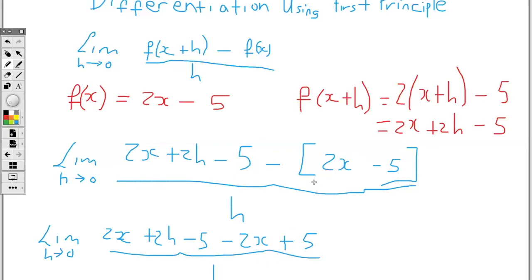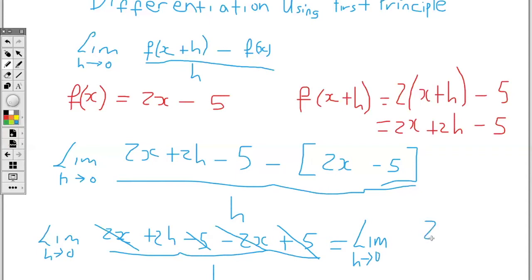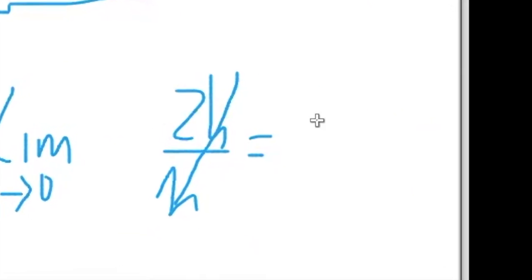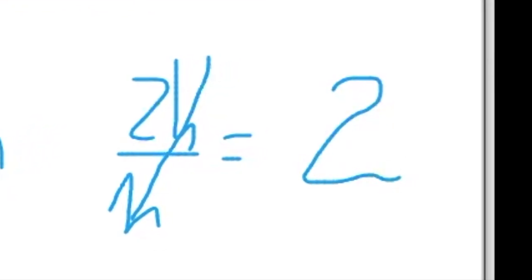One thing to be aware of: whatever is behind the subtraction sign will always cancel with something in front. Some people cancel the 2x straight away knowing it will be gone, and the minus 5 will cancel with positive 5. Showing all steps: 2x cancels minus 2x giving zero, and minus 5 plus 5 is zero. So we have the limit as h tends to 0 of 2h over h. The h cancels, and the limit of the number 2 is 2, so the answer is 2.